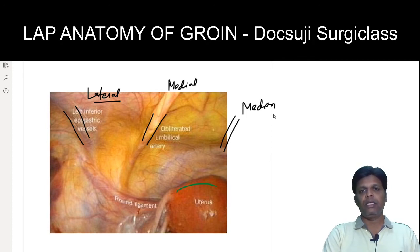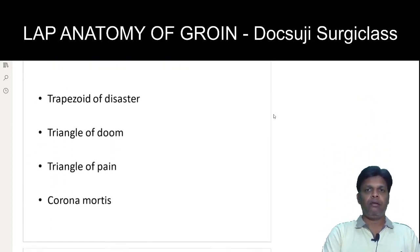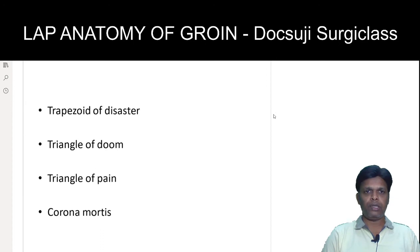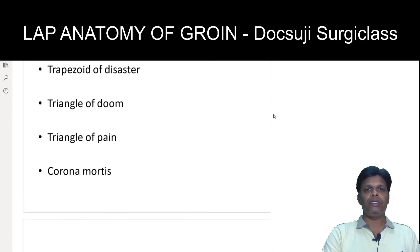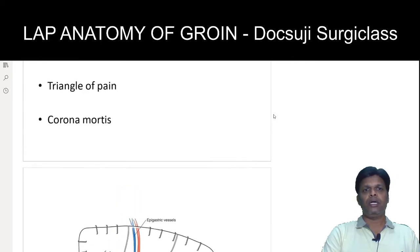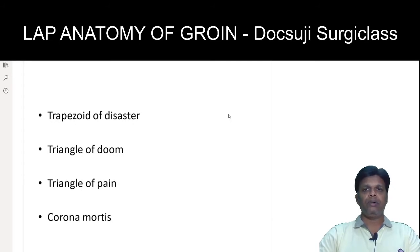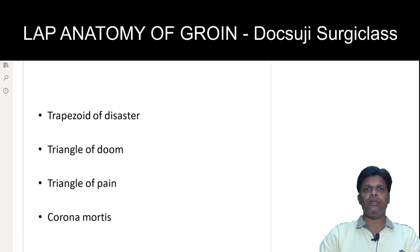These are the landmarks you must first identify when planning for laparoscopic hernia surgery. In addition to these anatomical structures, you should also know the following terminology: number one is the trapezoid of disaster, number two is the triangle of doom, number three is the triangle of pain, and number four is coronomatis.